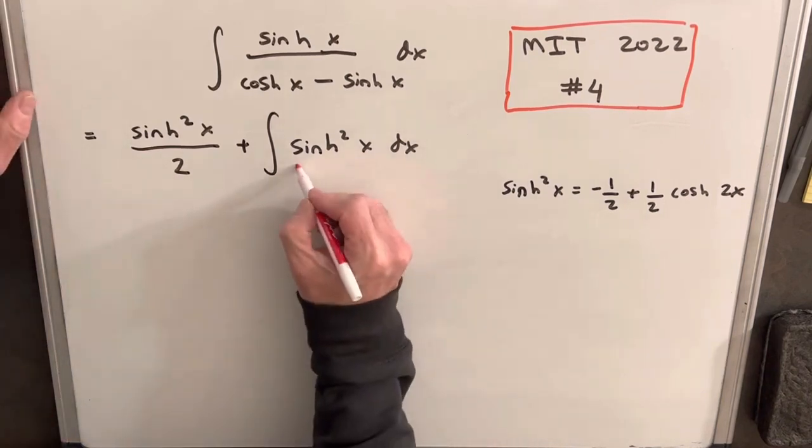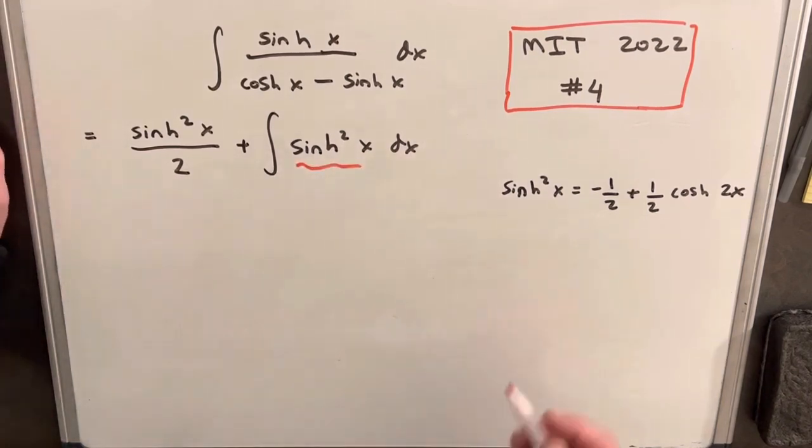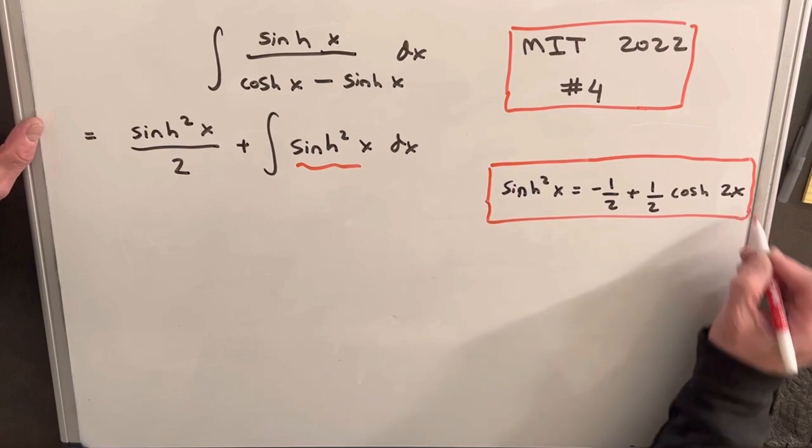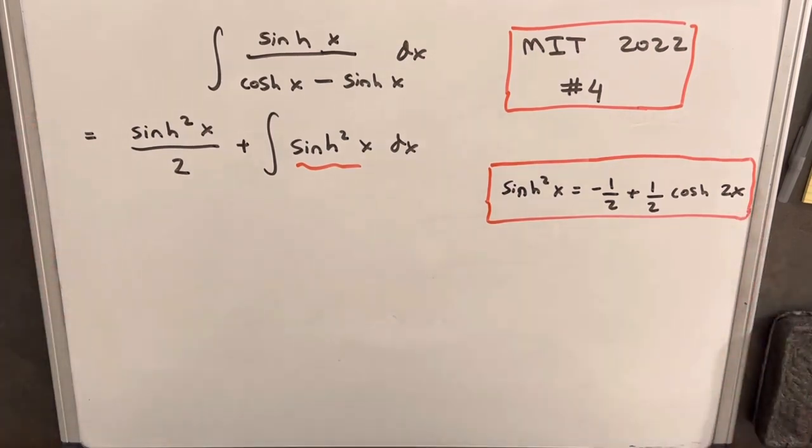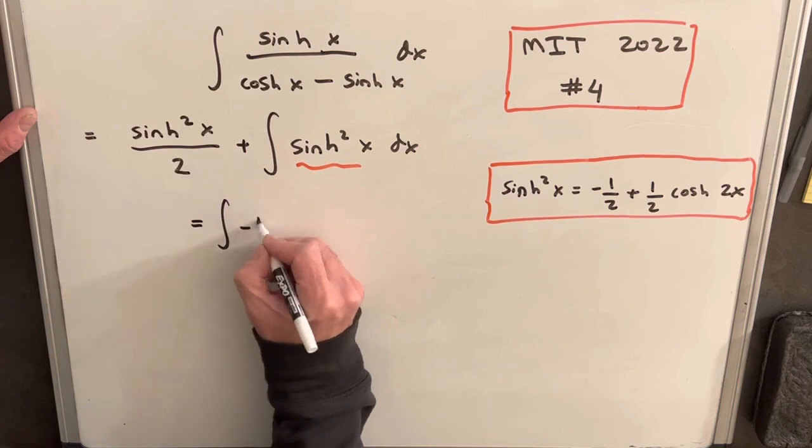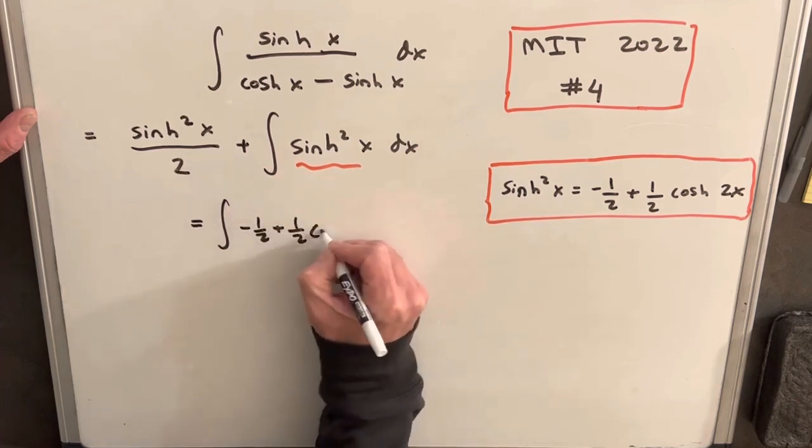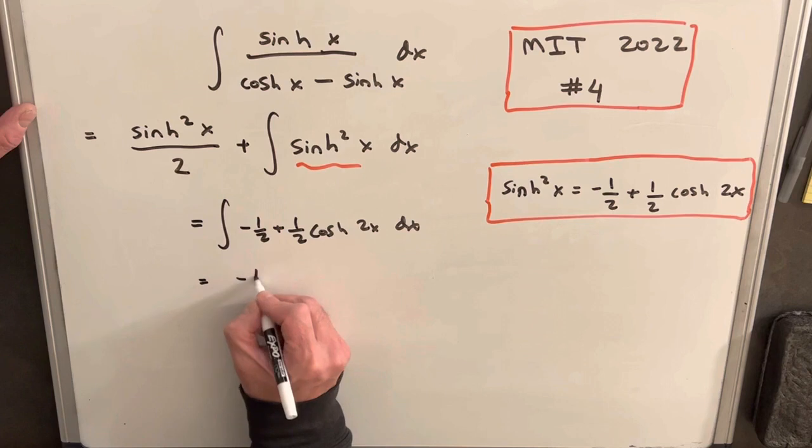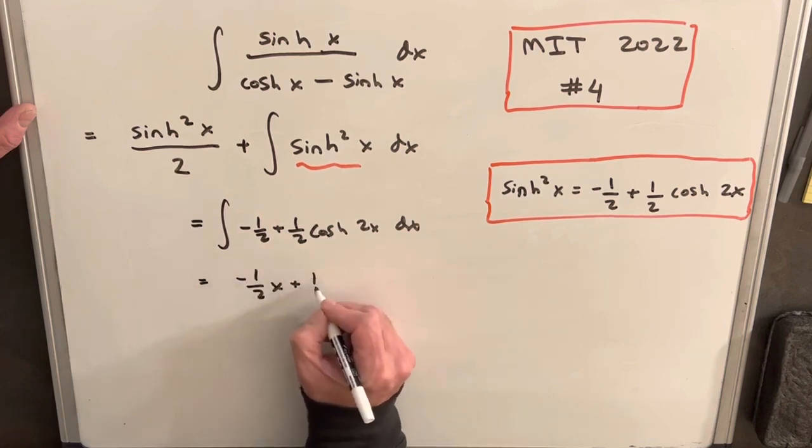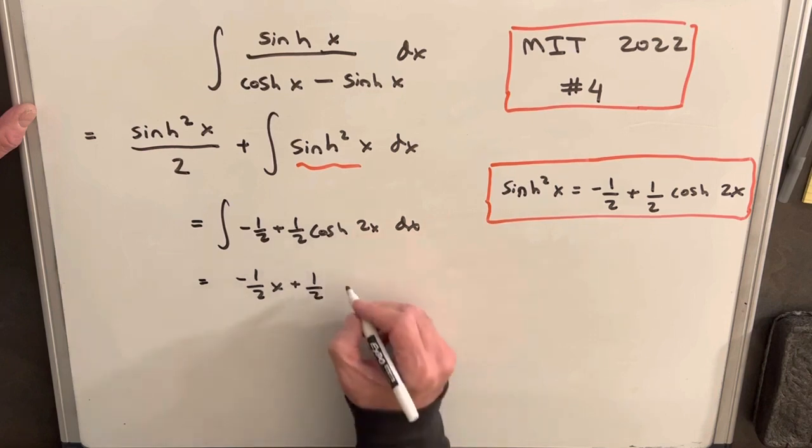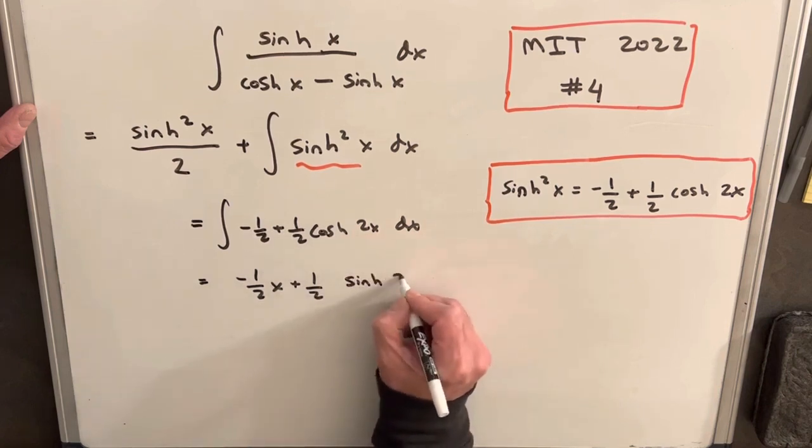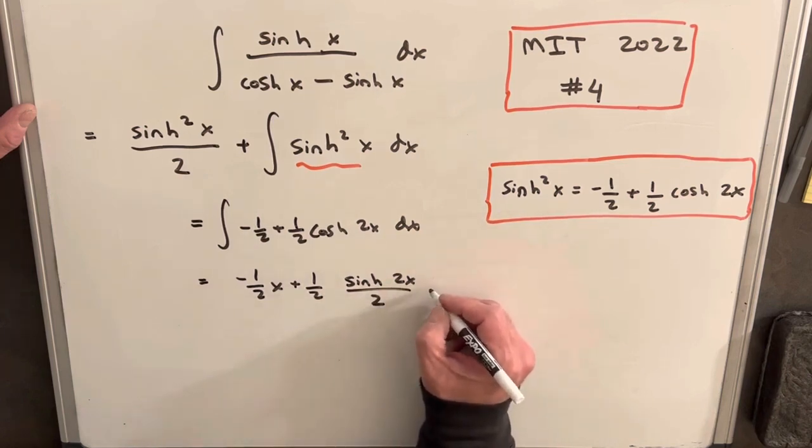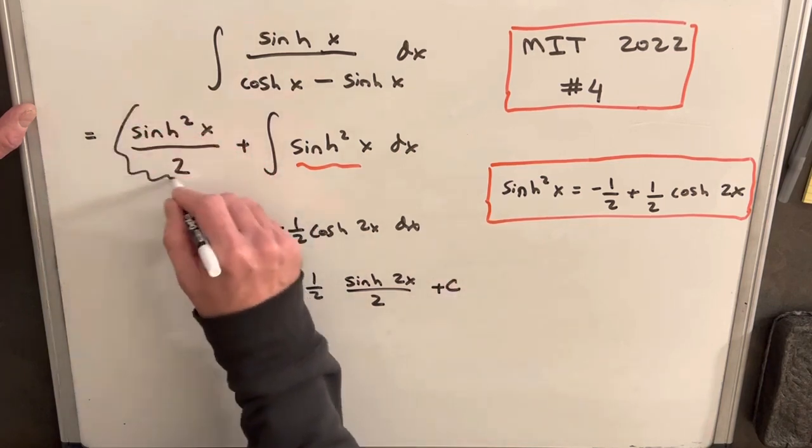So next, we just have to deal with this second integral. And for hyperbolic sin, there's a very similar power-reducing formula that we have for regular sin. And it looks like this on the right. So we'll use that. So we'll write this integral as minus 1 half plus 1 half cosh 2x dx. And now this thing is going to be actually easy to integrate. So we're going to have minus 1 half x plus 1 half. The integral of cosh is going to be sinh 2x. But we don't want to forget about our 2. So we'll divide by 2. And then, well, we can write a plus c, but I don't want to forget about this piece right here.